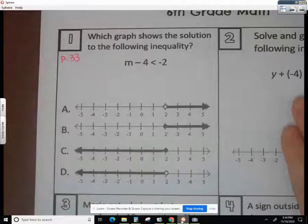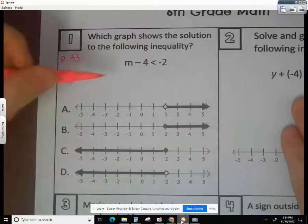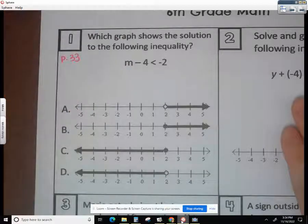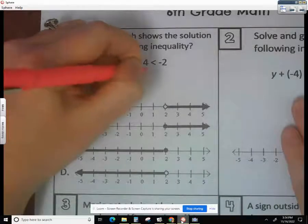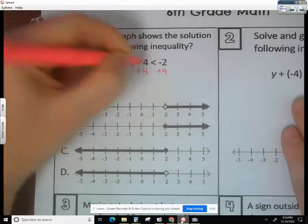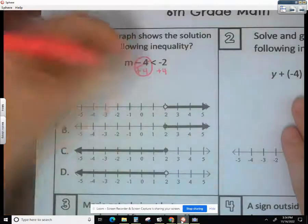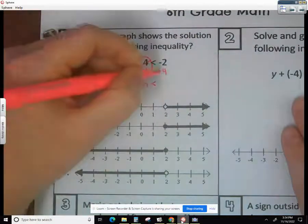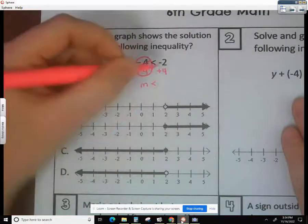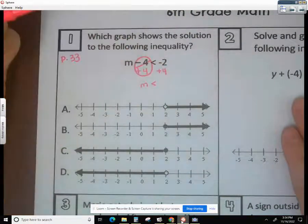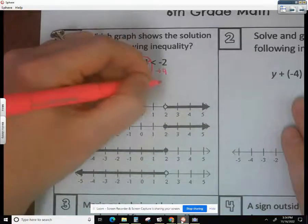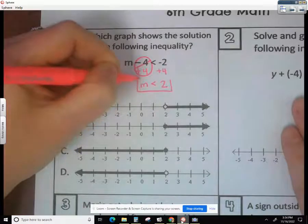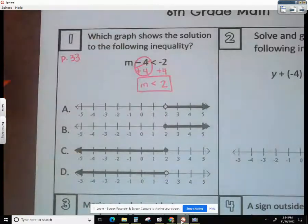To solve an inequality or equation, you want to get the variable by itself. So we want to get m by itself, which means we need to get rid of the minus 4. We get rid of minus 4 by using plus 4 to cancel it out. That's going to go away, leaving just m is less than. That would keep that same symbol. Over here we have different signs, so we find the difference, which is 2. We have more positives, so it's going to be positive 2. So m is less than 2.